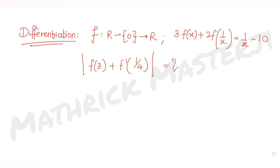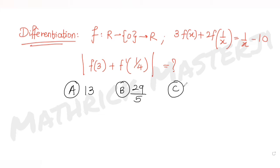The answer choices are: option A is 13, option B is 29/5, option C is 33/5, and option D is 7. We need to figure out the correct answer out of these four options.